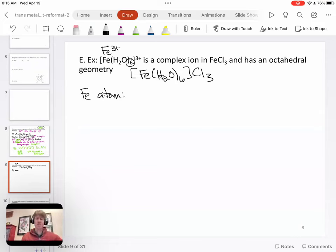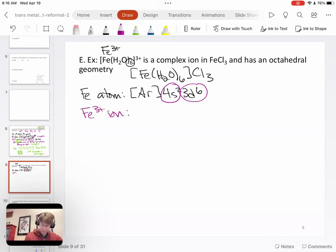And we can think about this if we do electron configuration. We can do the electron configuration of the iron atom. Iron has 26 electrons. It would have argon 4s2, 3d6 as its electron configuration for the atom. Then when we take three electrons away, we're going to take two of them from the 4s2 and one of them from the 3d6. So Fe3+ ion would have 3d5, and the d electrons are the complicated ones now.